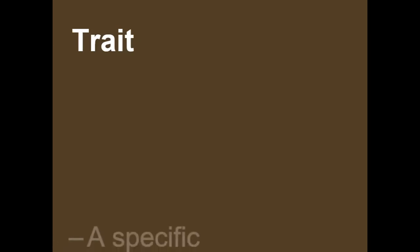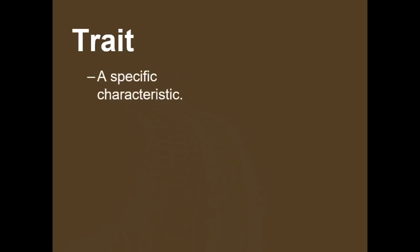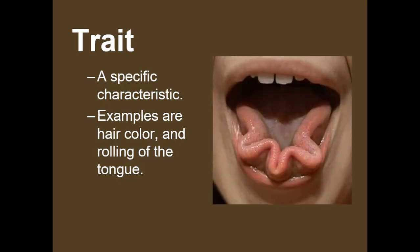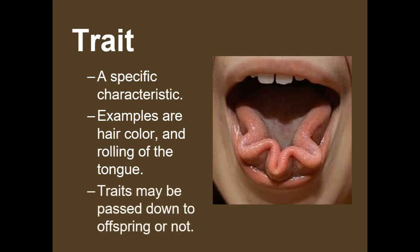A trait is a specific characteristic. Some examples would be hair color and the ability to roll your tongue. Here's a picture of an extreme tongue roller — I can't do this, but some people can. Usually in a class of about 30, maybe two can do this, so if you're one of those, you're a pretty special person. Traits may be passed down to offspring, or they might not.